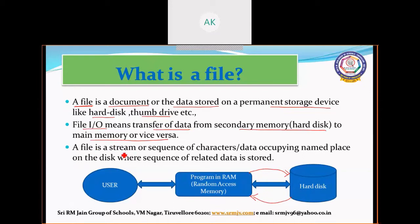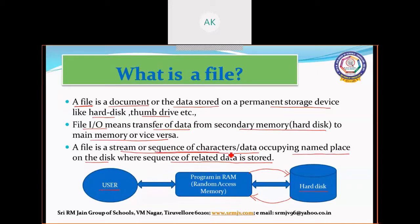A file is a stream or a sequence of characters — data occupying a named place on the disk where a sequence of related data is stored. The data which is transferred or stored in your hard disk is a sequence of characters, and a named place will be given in your hard disk with a file name and dot py extension, and the data gets stored in that file permanently.